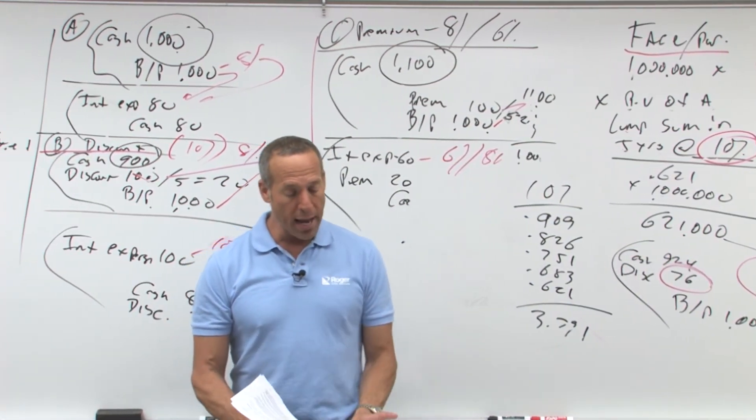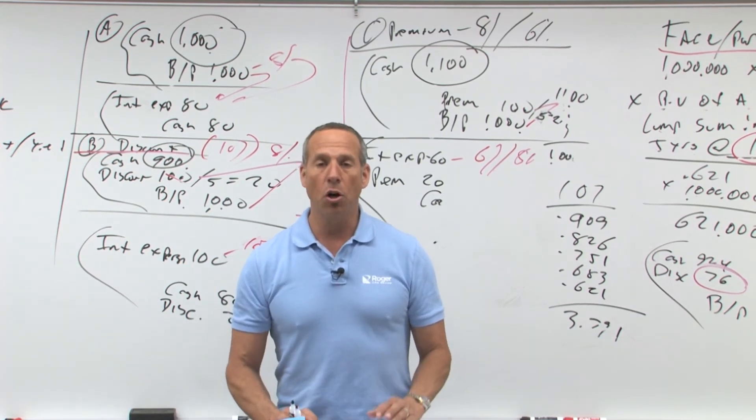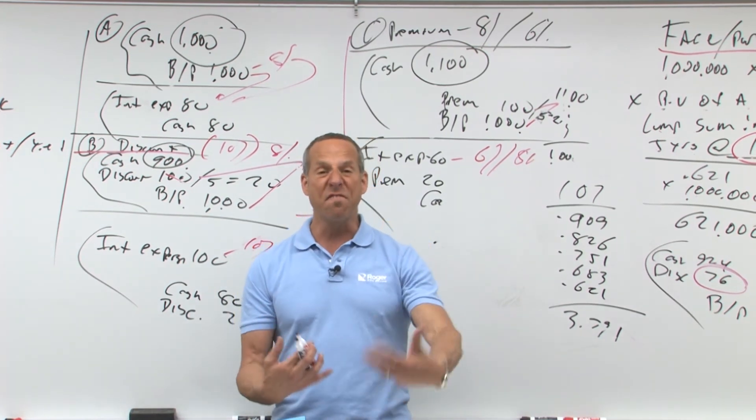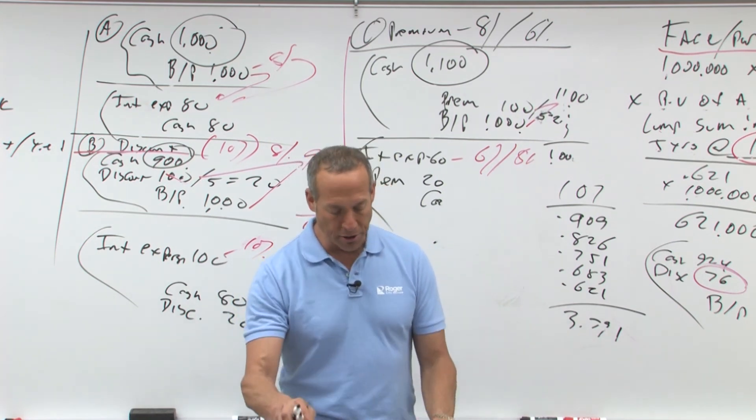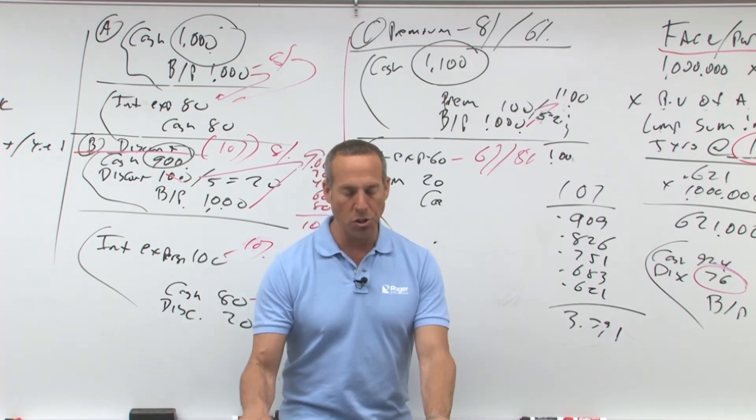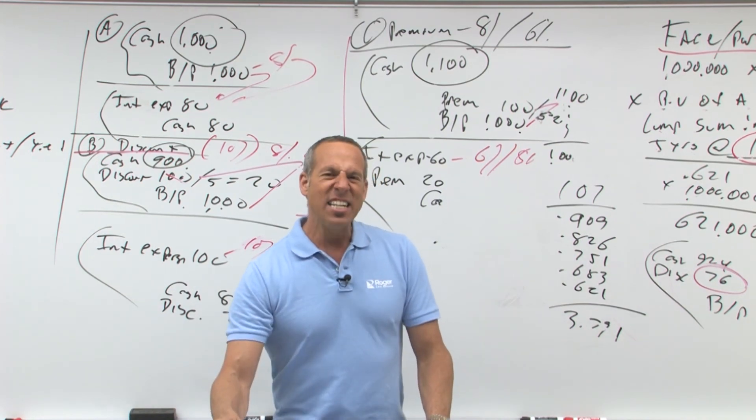So therefore what do we have to do? Instead what we had to do is we have to go through and figure out the effective interest table, which is using a whole different calculation. That's something that we need to understand, that's something that we need to do, but we're going to do that in just a minute.